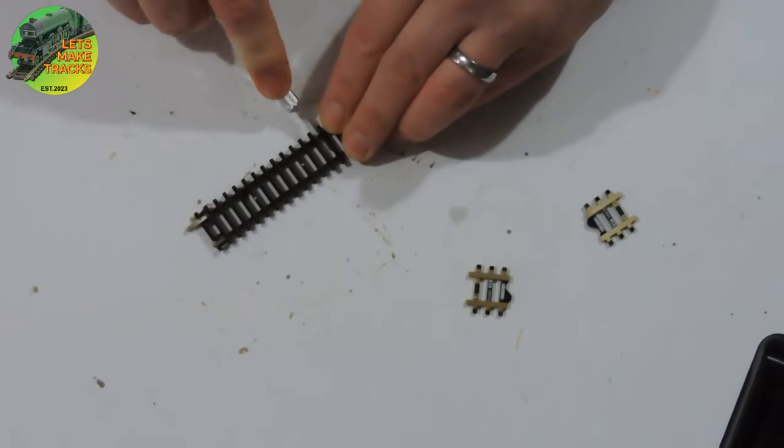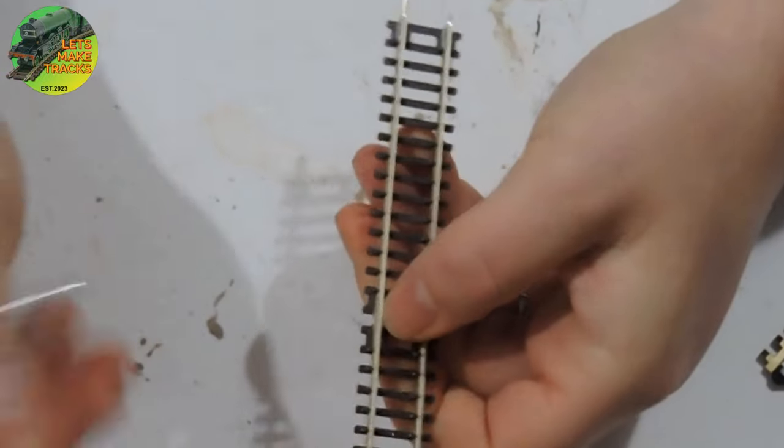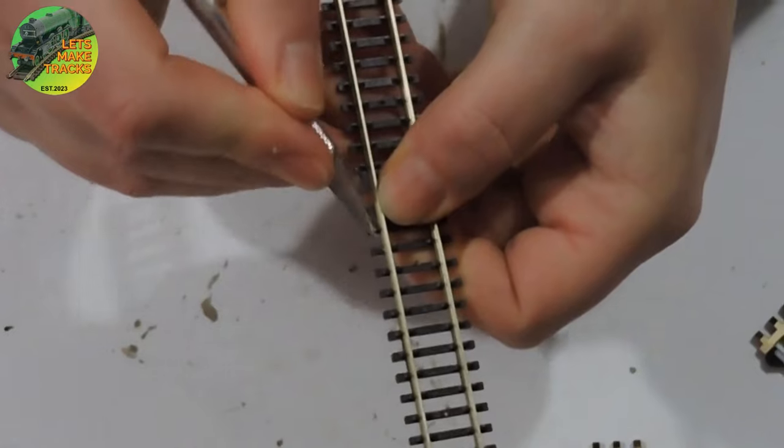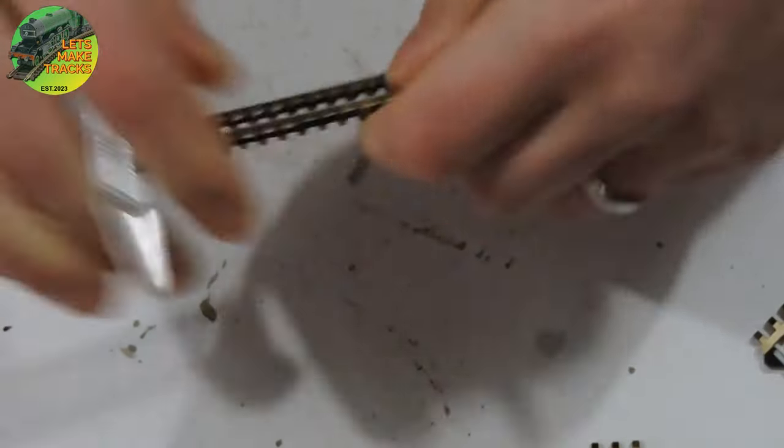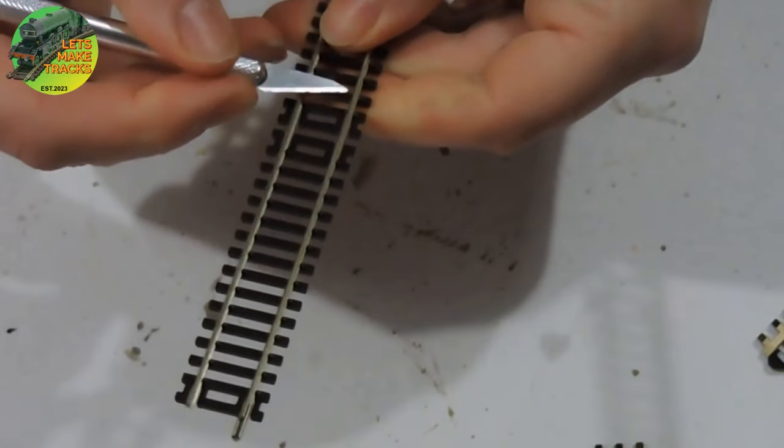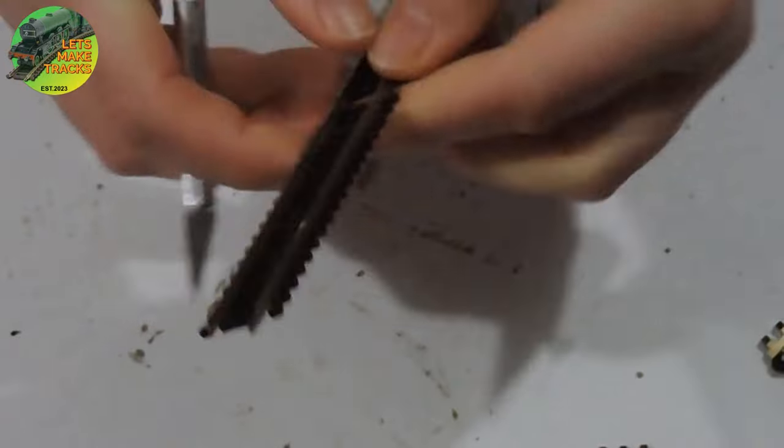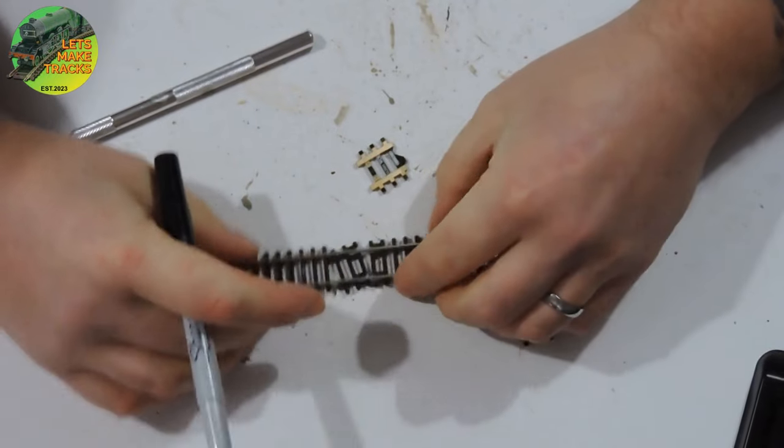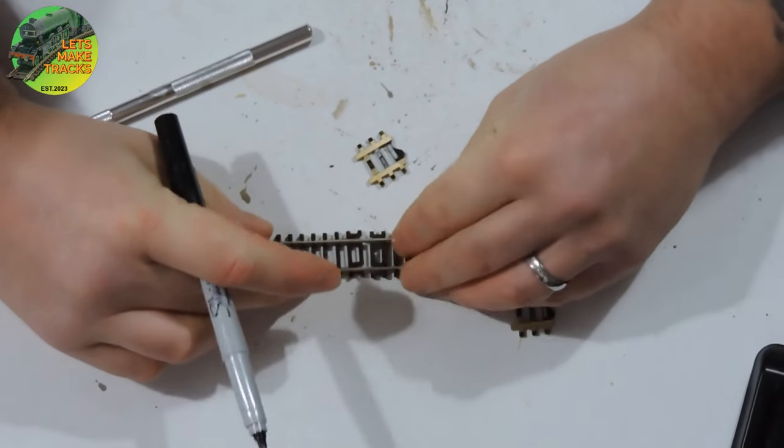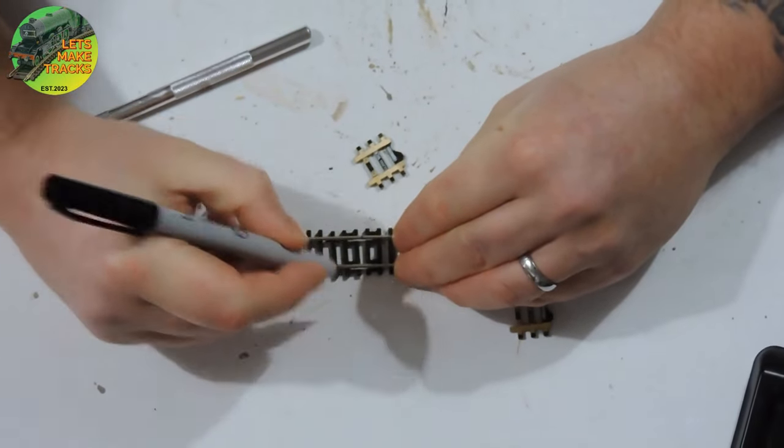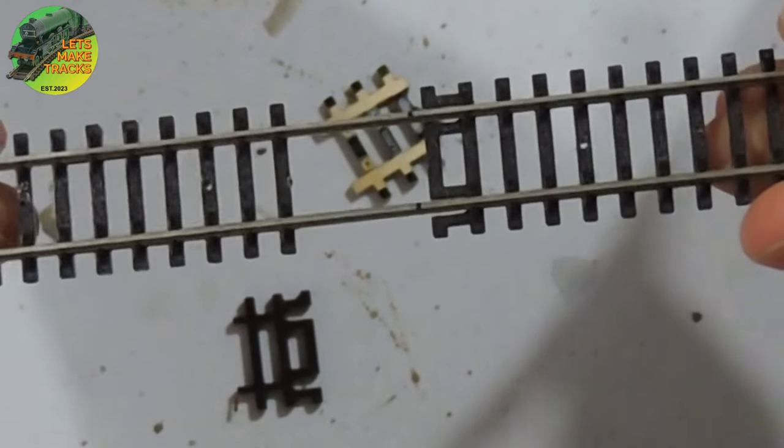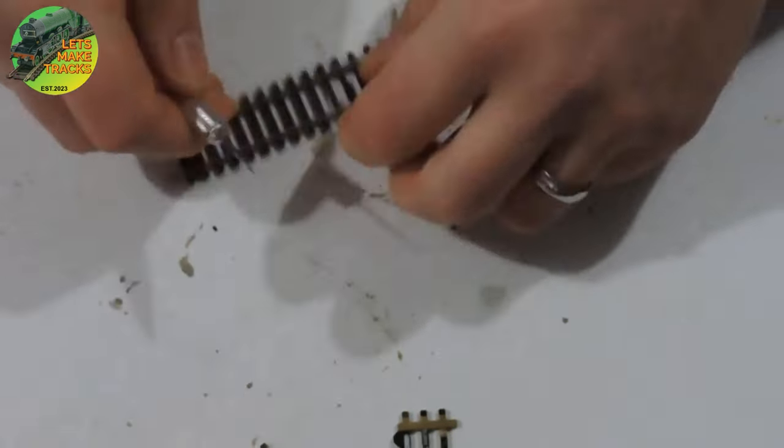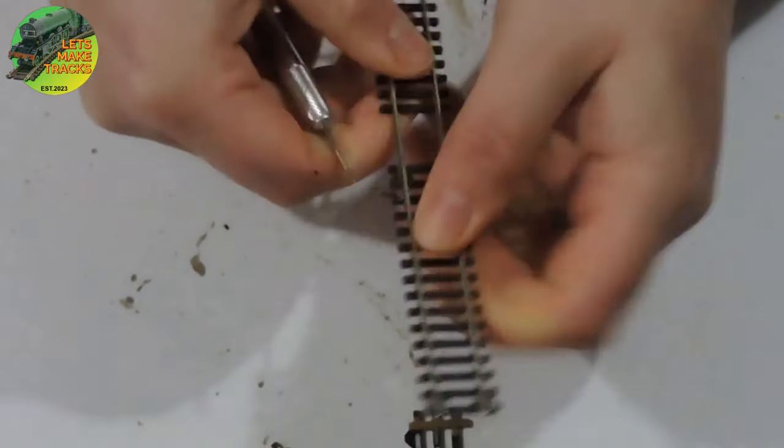But before I do that, I need to remove three sleepers from either side of the join so that the aligners can slip in. Just cut along the rail chairs just to release them. And they should, once you've cut out enough from one rail, pop up. Of course, you need to make sure you fully cut through the underside as well. Now, what I should have done before cutting that off was actually mark where the centre is or where I'm going to be cutting.